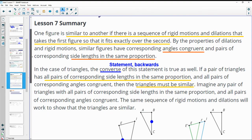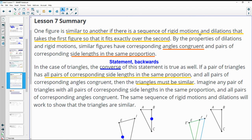All right, then the lesson summary. If one figure is similar to another, that means there's a sequence of rigid motions and dilations that takes one exactly over the second. So we've got congruent angles and side lengths in the same proportion. So those are the two things that make figures similar.